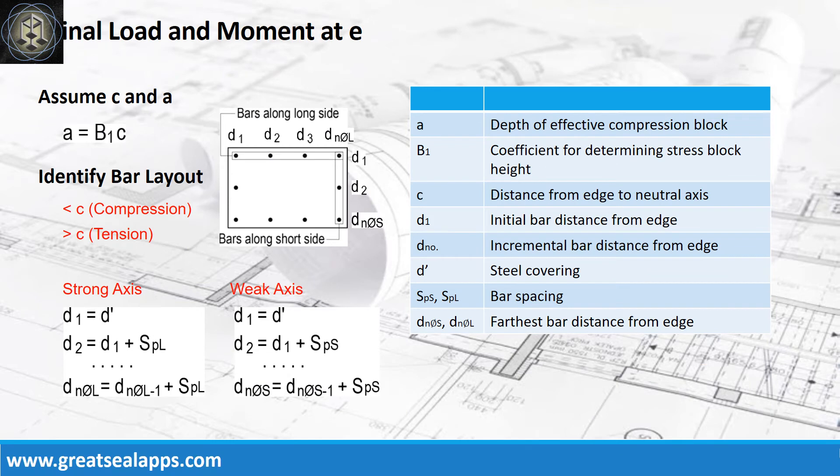Let the value of neutral axis C correspond to the given eccentricity. Identify bar layouts with their distances from the edge of the column section and their force type relative to their position from the neutral axis.